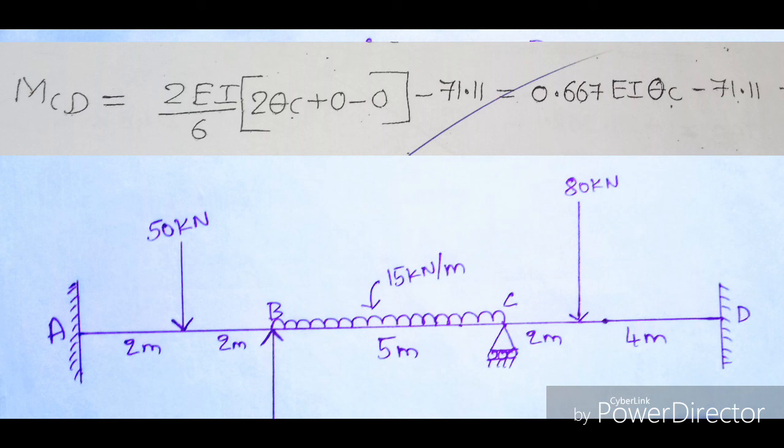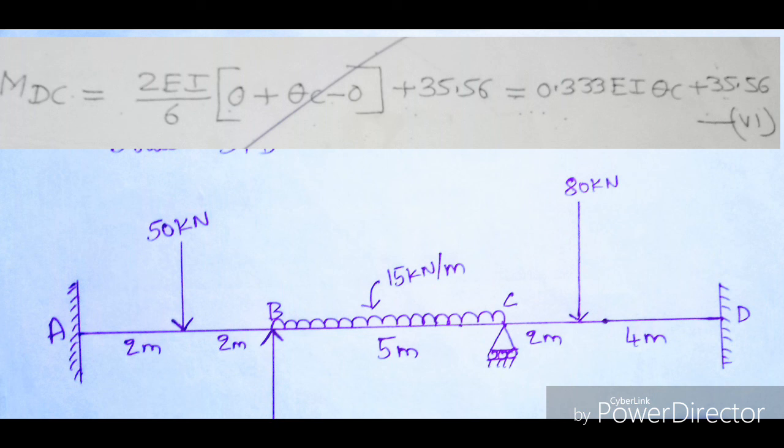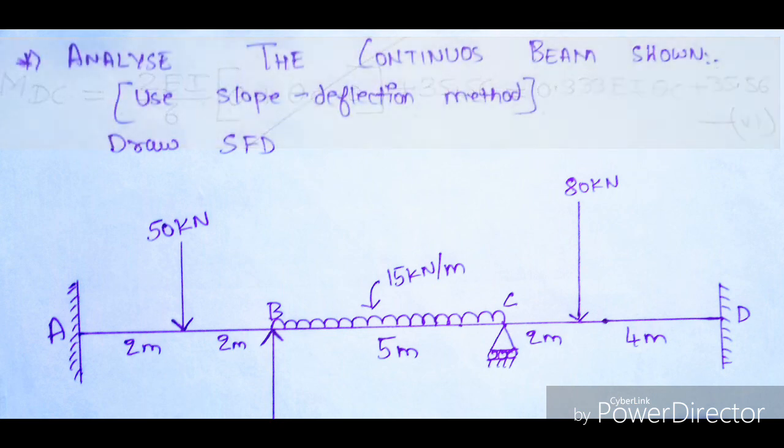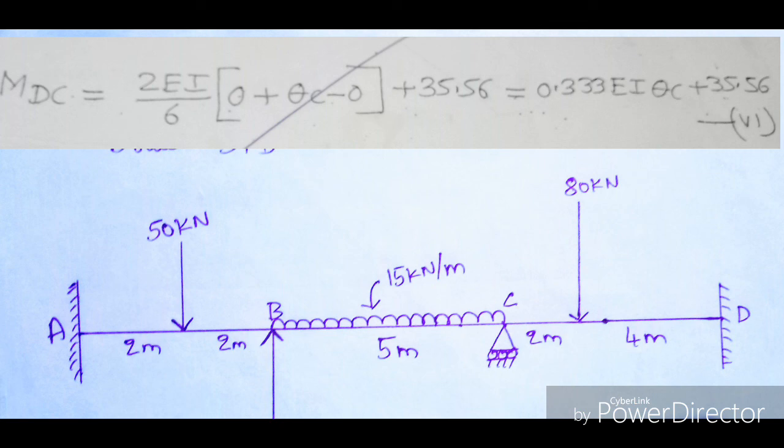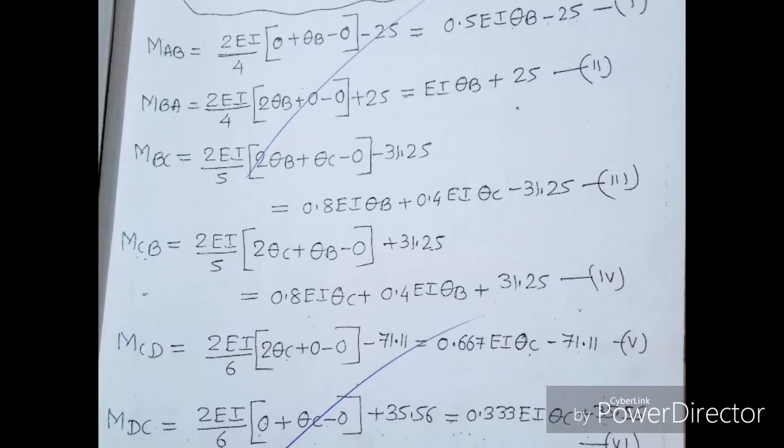For M_CD: L = 6. M_CD = (2EI/6)(2θ_C + θ_D) + MF_CD. Since θ_D = 0 and MF_CD = −71.11, on solving we get M_CD = 0.667EIθ_C − 71.11. For M_DC: L = 6. Since θ_D = 0 and MF_DC = +35.56, on solving we get M_DC = 0.333EIθ_C + 35.56.